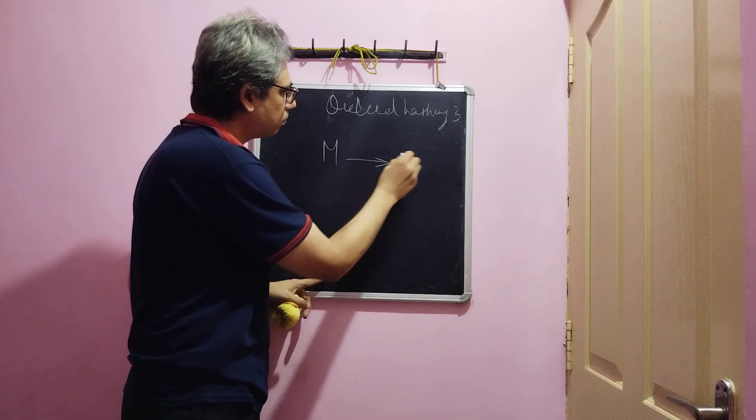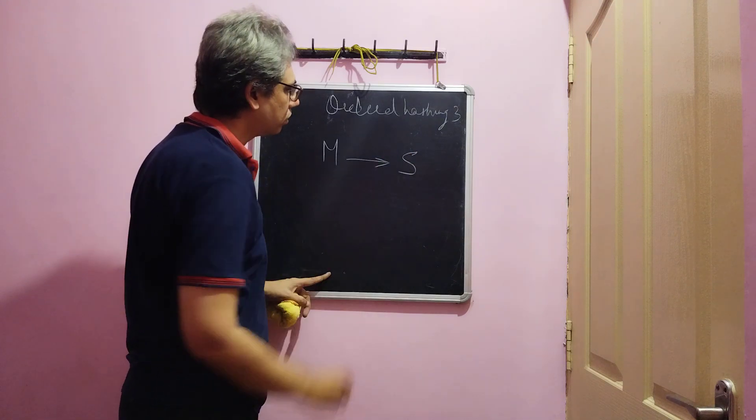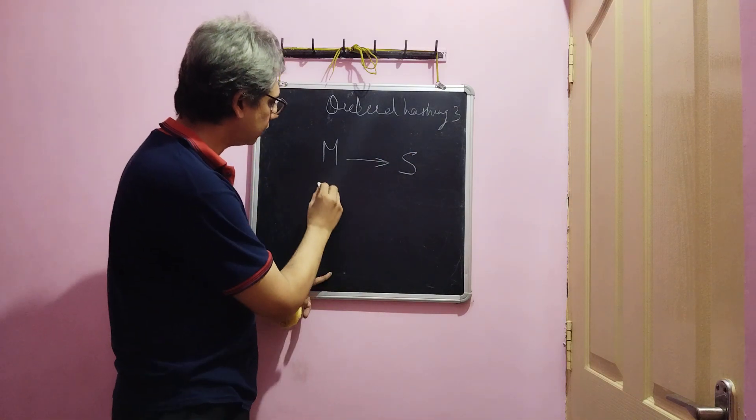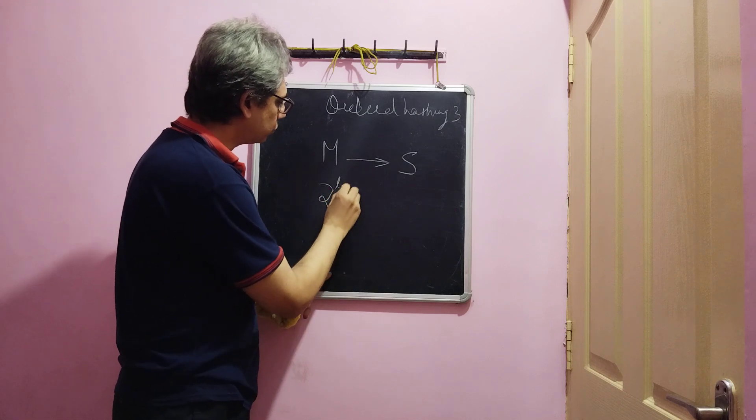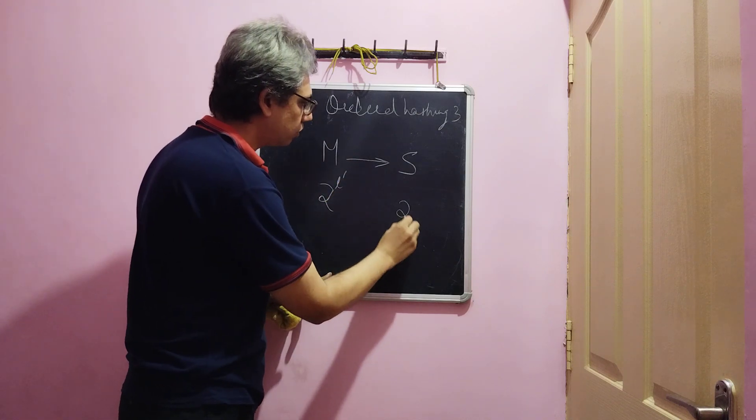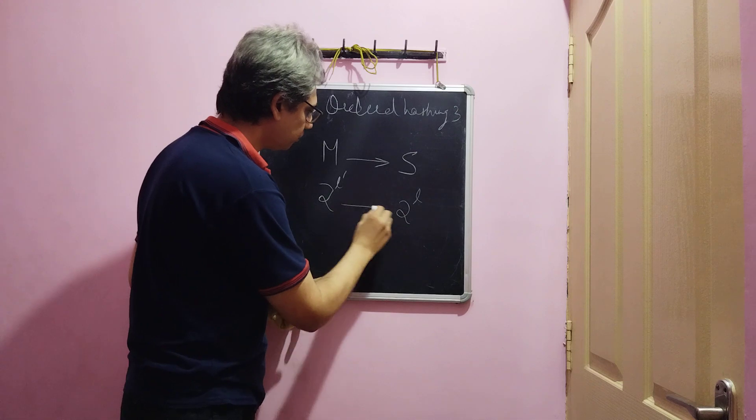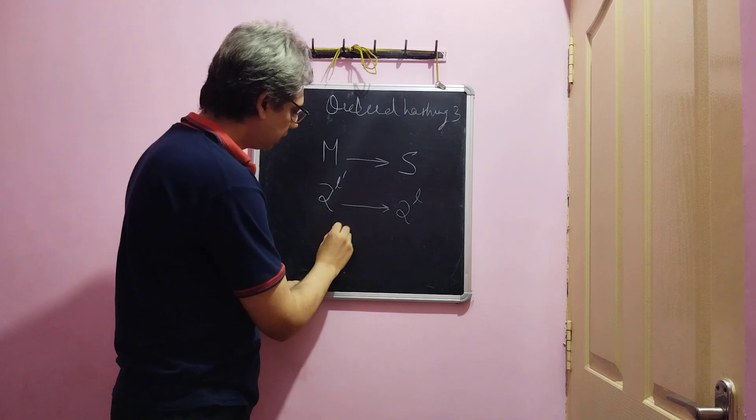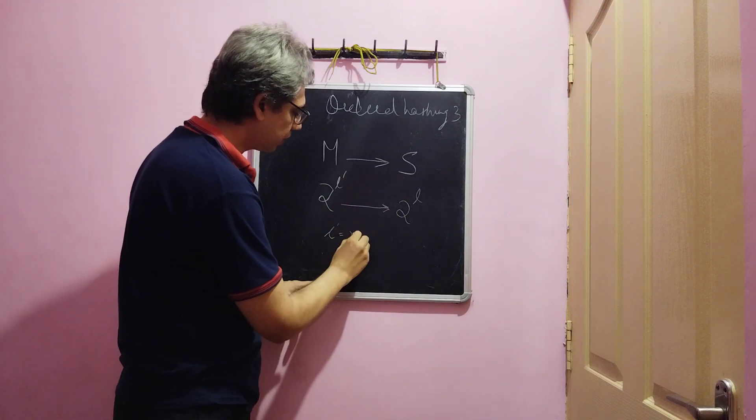Our objective is to map a number which is less than m to a number which is less than s. And m is equal to 2 power l dash and s is equal to 2 power l, where l dash is equal to n times l.